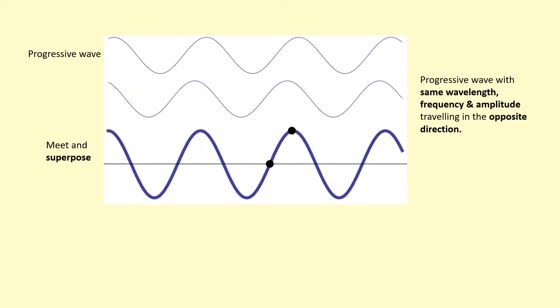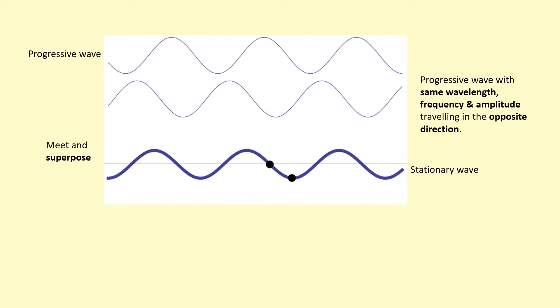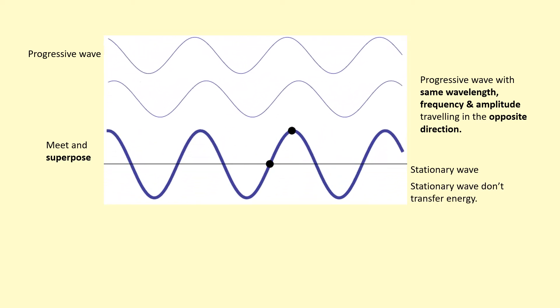When they do this, a new type of wave is formed. It's called a stationary wave. A stationary wave is different from the progressive wave because it doesn't transfer energy.